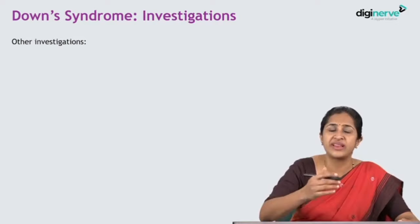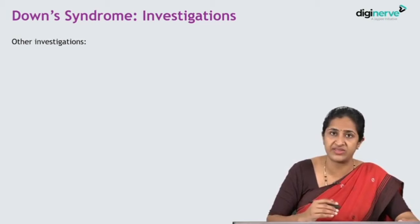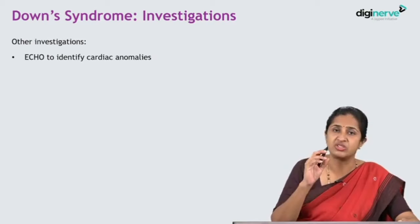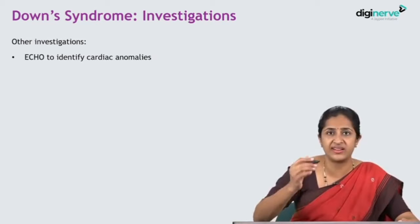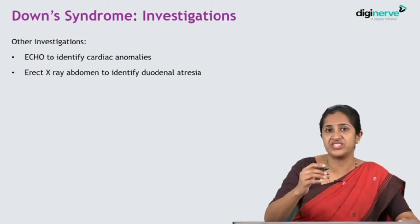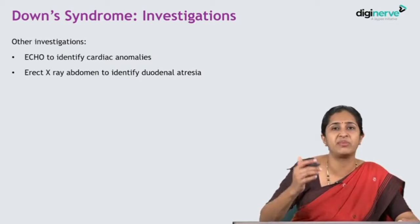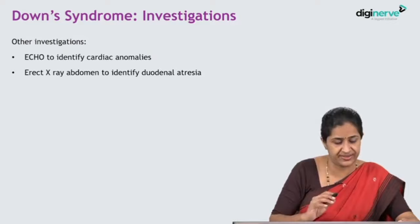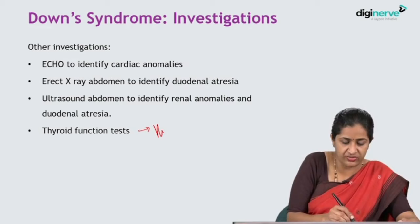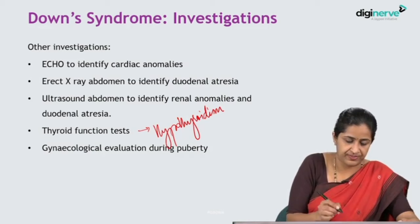Other investigations done after diagnosing Down syndrome include: an echo to rule out cardiac anomalies — whenever Down syndrome is confirmed, get an echo done to check for underlying cardiac anomalies. An erect X-ray abdomen especially when the child has neonatal vomiting, to identify duodenal atresia. Ultrasound abdomen to identify renal anomalies and confirm duodenal atresia. Thyroid function test because of the association of Down syndrome with hypothyroidism. Gynecological evaluation during puberty because of association with infertility, irregular cycles, and delayed menarche.